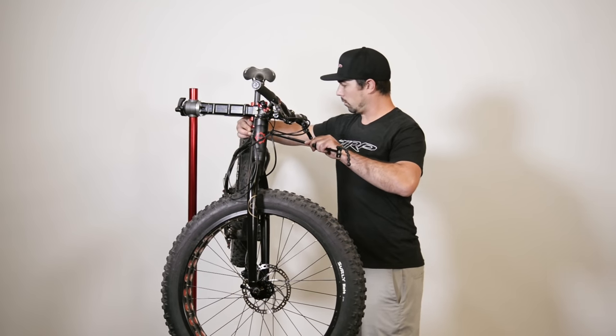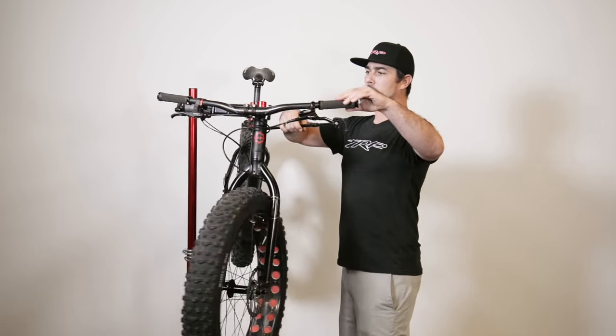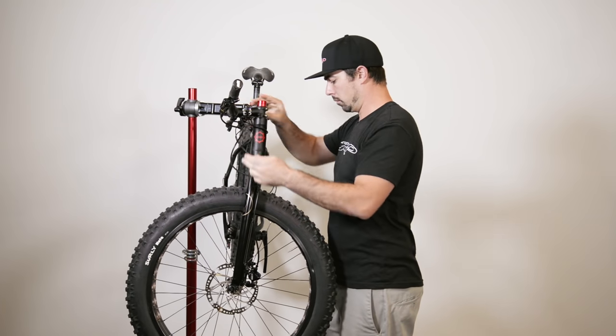To start off, lock the handlebar in place and adjust the angle of the bike so that the lever bleed port is the highest point.